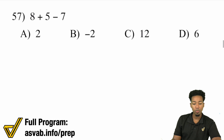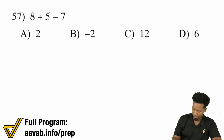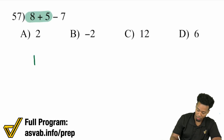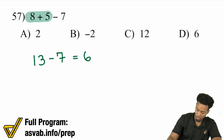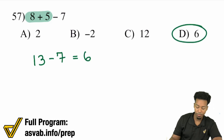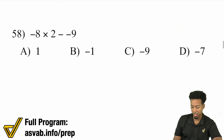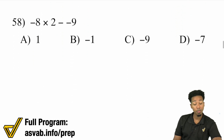Number 57: we have 8 plus 5 minus 7. 8 plus 5, that's going to give us 13. And then 13 minus 7, that's going to be 6. Didn't have to deal with a negative there, and that's okay.